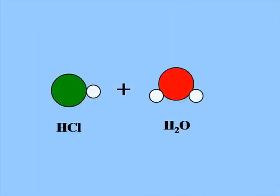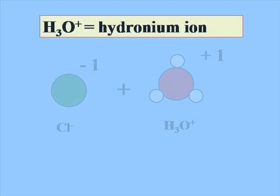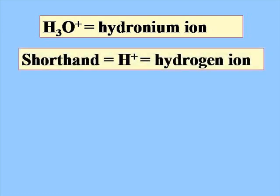When HCl transfers its proton to the water, the H3O+, or the hydronium ion, is formed, and the Cl− ion remains from the original HCl. H3O+ is called the hydronium ion. Chemists often abbreviate the hydronium ion as H+ or hydrogen ion, but in actuality there is no free H+ ion — the H+ is attached to the water molecule forming the H3O+ hydronium ion. It is just often written as the shorthand H+.